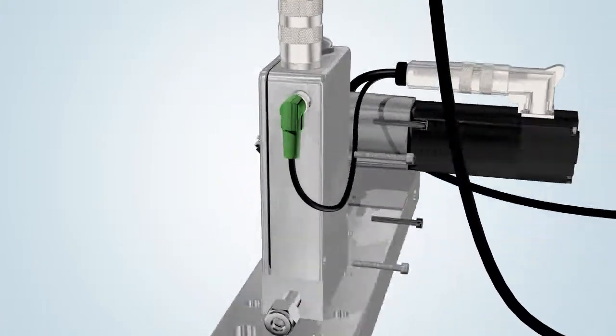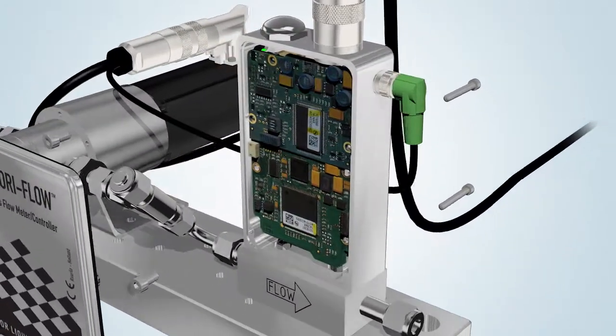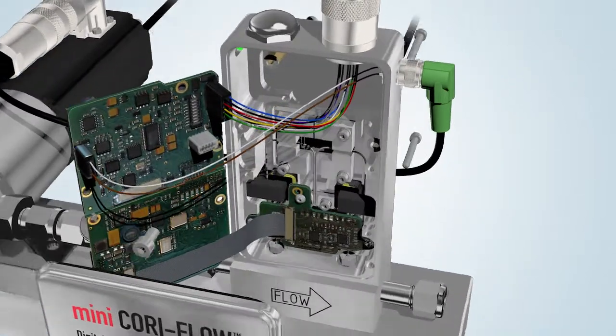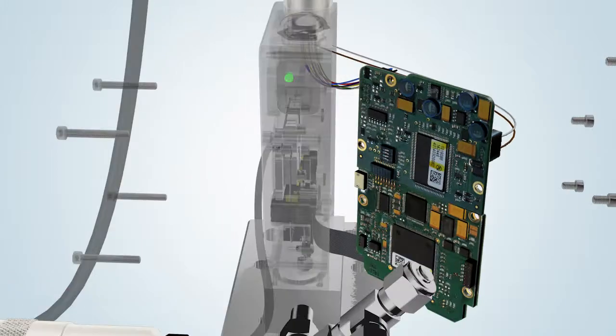Inside the robust Mini CoriFlow housing are the digital electronics, optical sensor and sensor tube. The internal diameter of the sensor ranges from 0.25 mm to 3.1 mm.